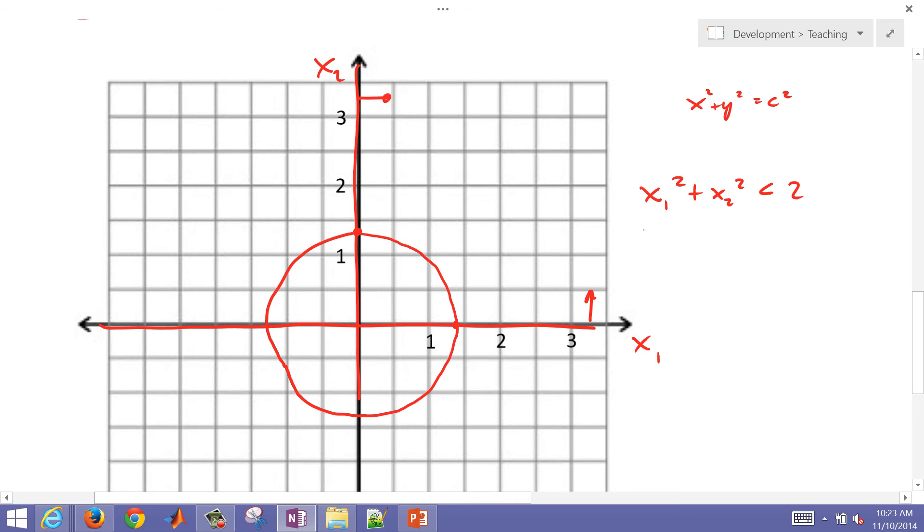Now we have another one, which is x1 squared plus x2 squared is greater than 1. So I have a similar circle, but it's going to come around here like this. And I know it has to be on the outside of that circle because it's greater than 1. So our feasible space is going to be somewhere right in the middle of that region. Let me just erase everything except the ones that really count.